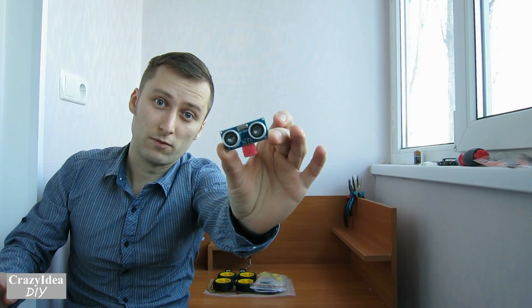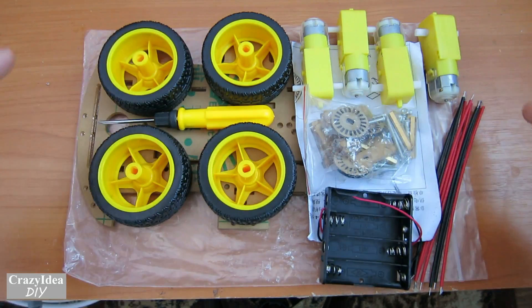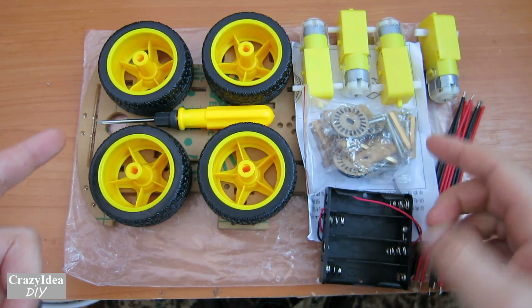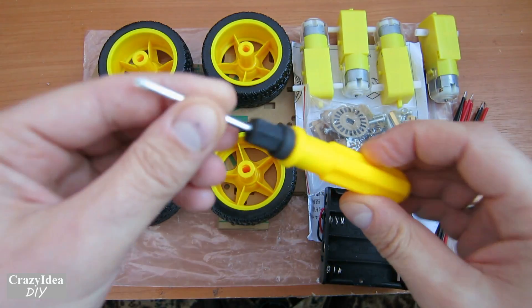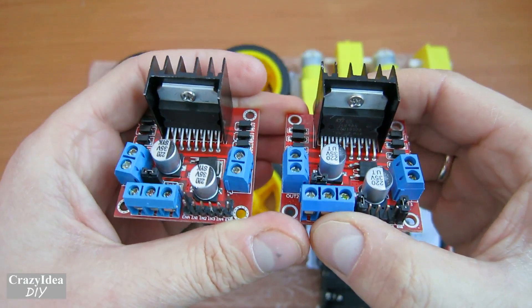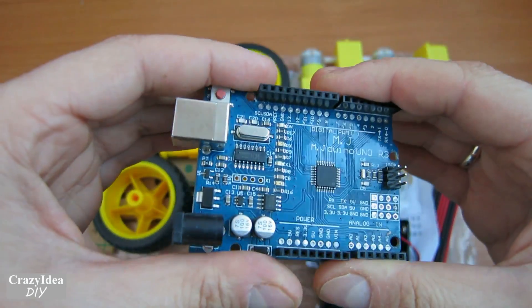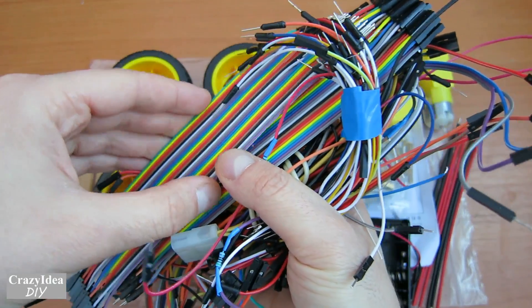Hello friends, today we will make a robot car using an ultrasonic rangefinder. We need four wheels, four motors, one frame, fasteners, battery compartment, wires, and a screwdriver. We also need two engine drivers L298N, Arduino Uno, and connection wires. We will see what we actually need in the course of the video.